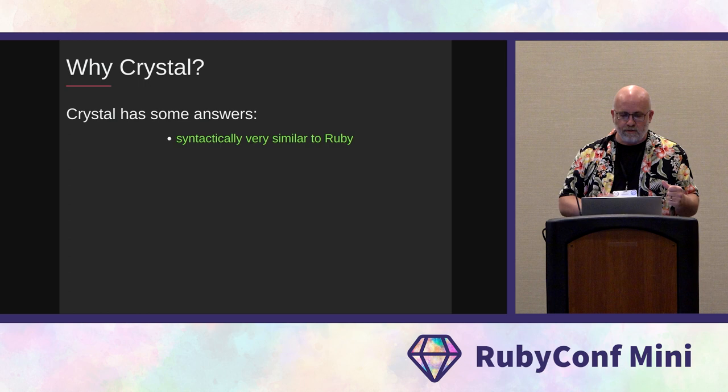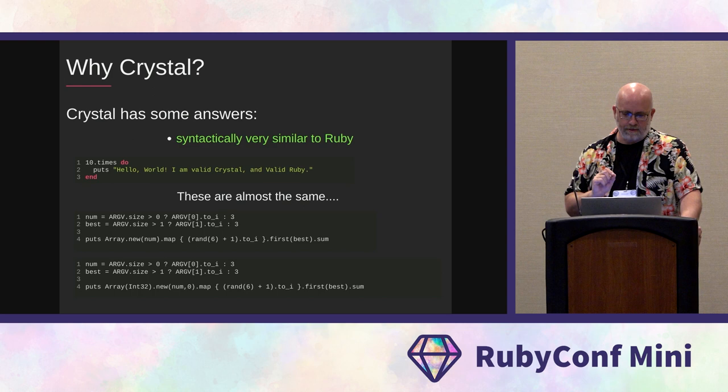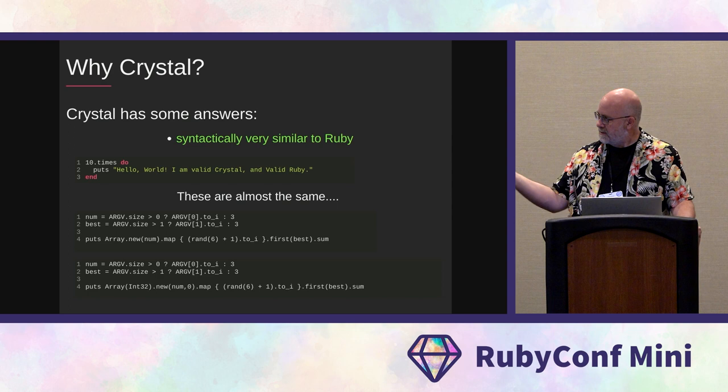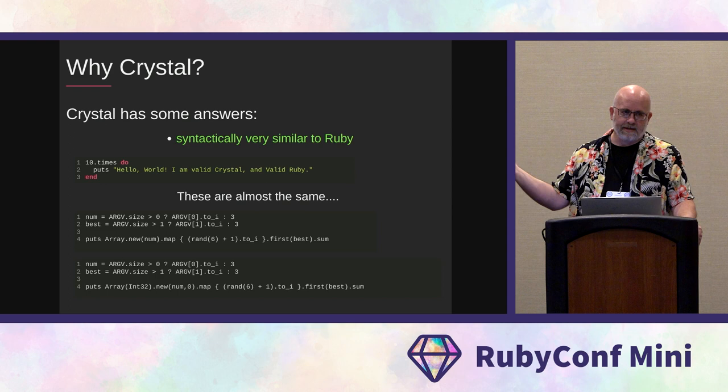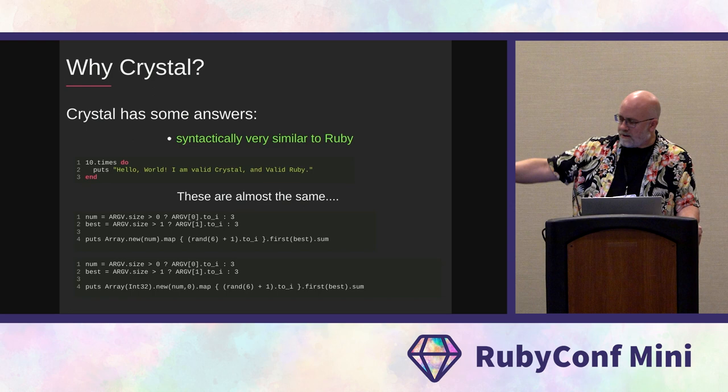Crystal has some answers to some of these things. It is syntactically extremely similar to Ruby. If you look at a code snippet, it might be identical whether it's Crystal or Ruby. The next snippets are almost the same — the one on top is Ruby and the one on the bottom is Crystal. The only difference is that in Crystal, if you're declaring an array, you have to tell it what it's going to store, so you have a little bit of typing information in there.